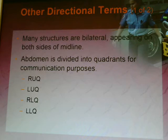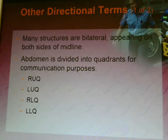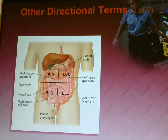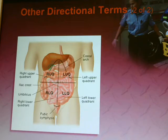Many structures are bilateral — appearing on both sides of the midline, like bilateral femurs. Your abdomen is also divided into four quadrants for communication purposes: right upper, left upper, right lower, and left lower. You'll talk a lot more about those when we get to abdominal injuries. When you do your patient assessment and palpate the abdomen, this is what you're assessing: right upper, left upper, right lower, left lower.